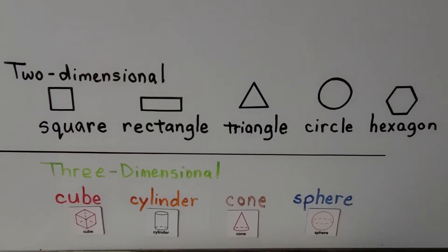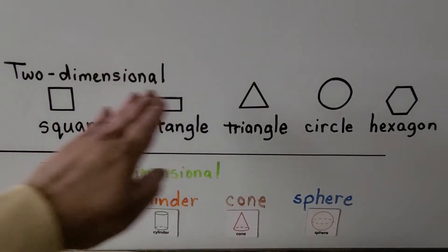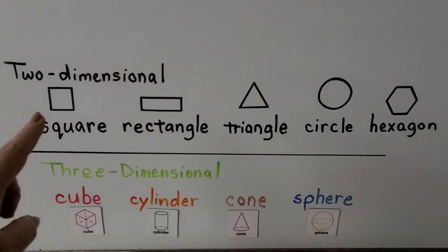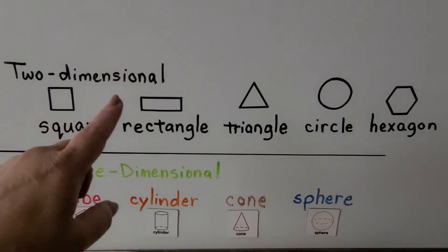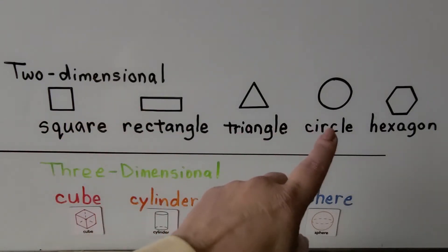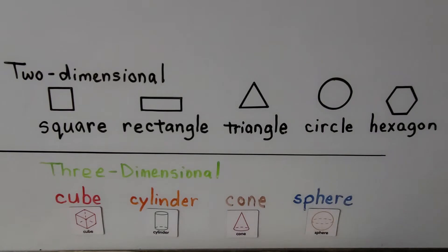Two-dimensional shapes are flat. They're flat shapes: a square, rectangle, triangle, circle, hexagon. These are two-dimensional shapes.